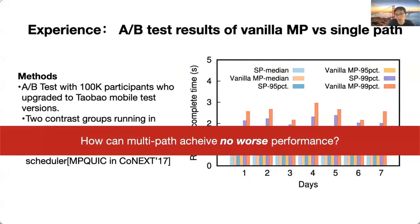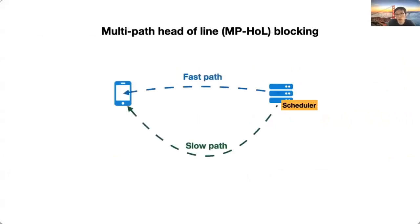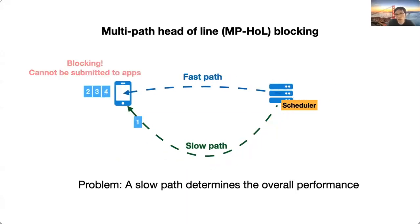The major problem was head-of-line blocking. When the scheduler splits packets across two paths, the path RTT difference can be very large in wireless, causing a blocking effect as out-of-order packets cannot be submitted to the application layer. In other words, due to multipath head-of-line blocking, it is the slow path that determines the overall performance.